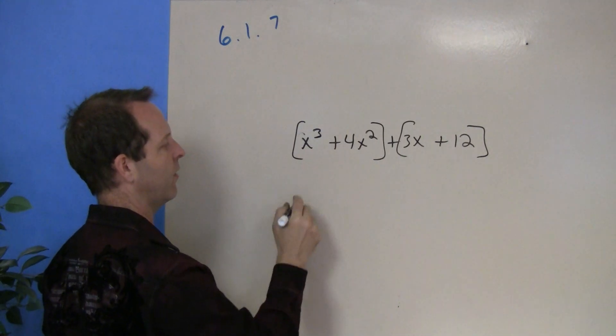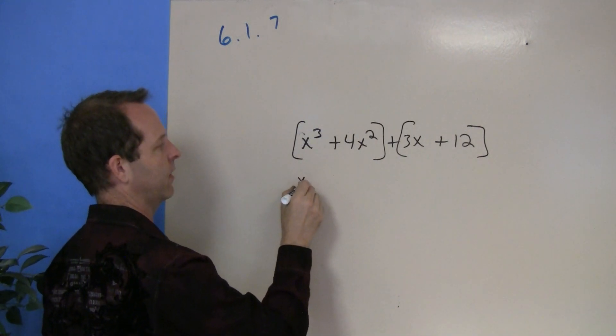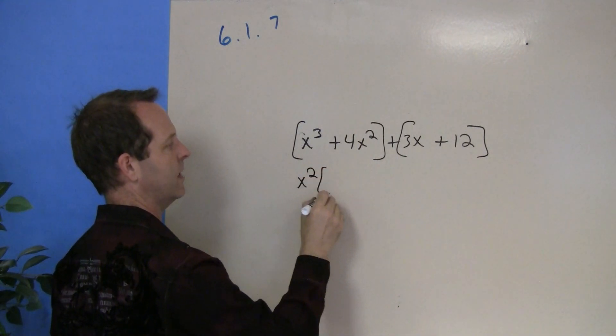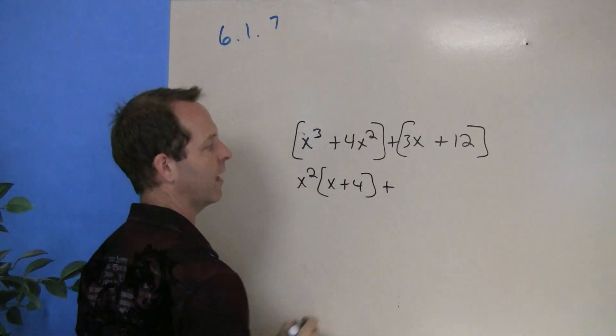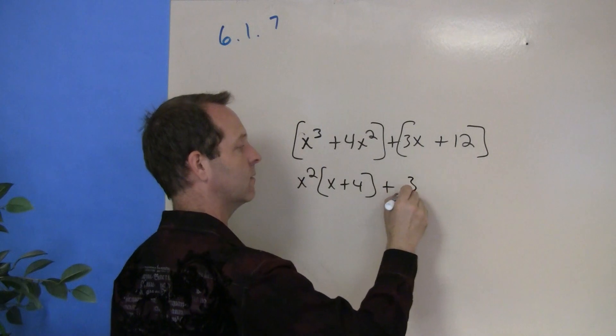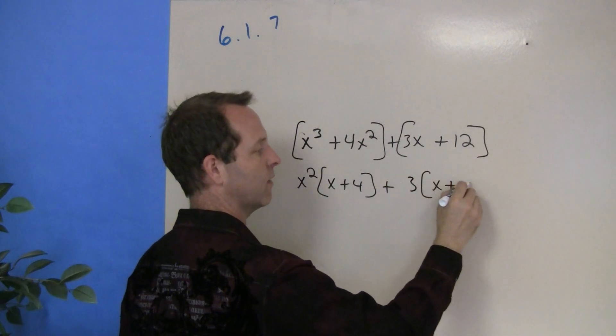As I group the first two terms together I can do a little bit of a mini factor. x squared and then what's left is an x plus a 4. Plus over here I can factor a 3 out and what's left is an x plus a 4.